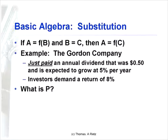Now we'll go through four or five simple algebra relationships we're going to use over and over again in class. The first one we've already used a couple of times, called substitution. If we know that A — for example, the price in the Gordon Growth Model — is some function of B, such as next period's dividend, but we don't know next period's dividend and we know it equals something else C, then we can substitute in. In the Gordon Growth Model, next period's dividend equals this period's dividend times one plus growth.